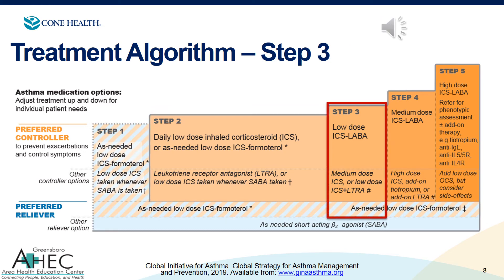Step 3 covers patients who are having symptoms every day, waking up with symptoms, or having risk factors for asthma-related complications. They should be started on a daily low-dose ICS-LABA, and if started on Symbicort, they would also use Symbicort as their preferred reliever. However, if started on one of our other ICS-LABA combinations, you would also prescribe albuterol for them to use as their preferred reliever.